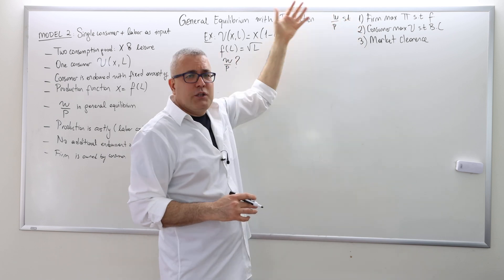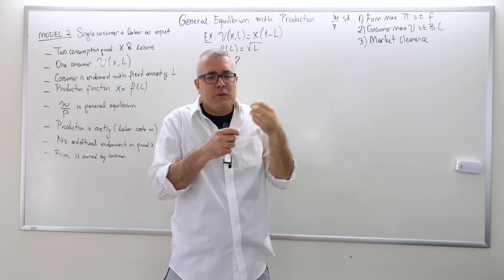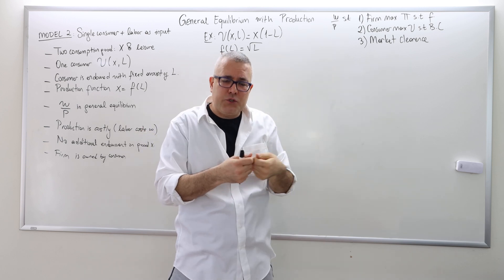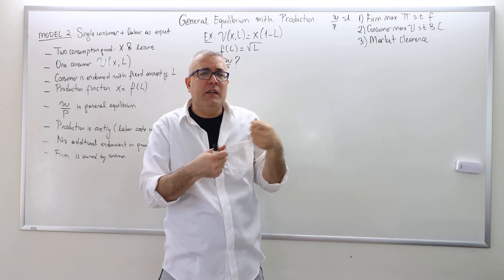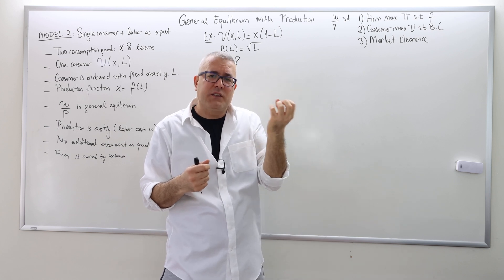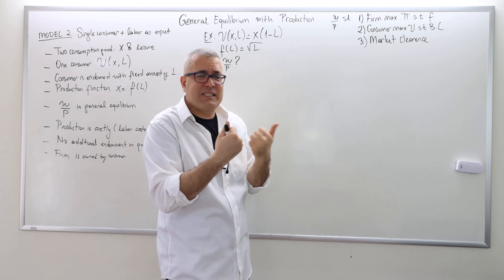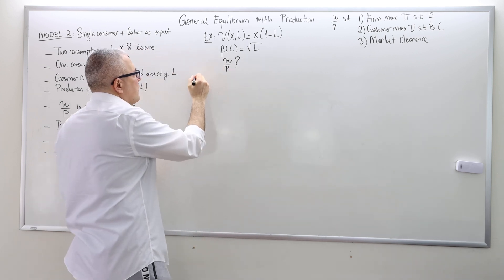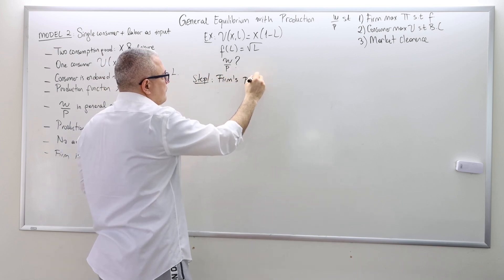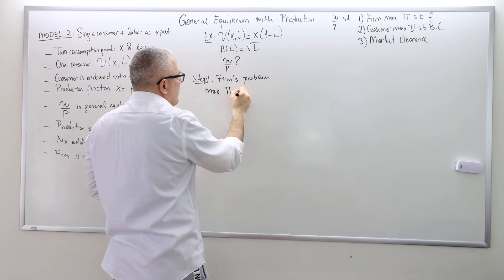The price ratio should be such that the firm is finding its optimal supply — meaning the firm maximizes its profit given the technology constraint. The consumers should demand optimally — meaning they maximize their utilities subject to their budget constraints. And third, those prices should be such that there is no excess demand and no excess supply — so the market clears. I'm going to start with step one: the firm's problem. The firm's problem is to maximize profit subject to technology.